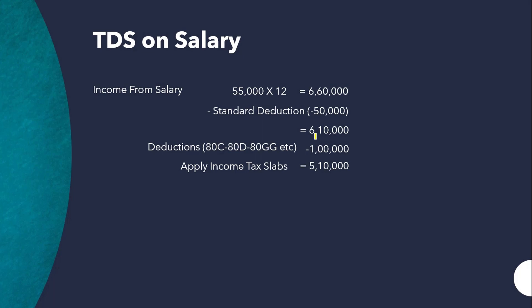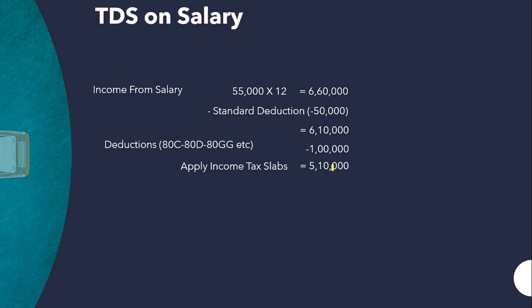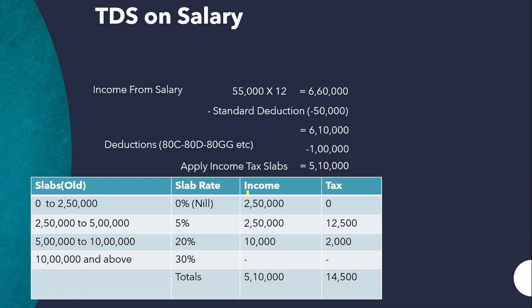We apply income tax slabs to ₹5,10,000. Note that I am using the old tax slabs, where you can claim the standard deduction of ₹50,000 and also deductions under Chapter 6A. Under the new income tax slab, these deductions cannot be utilized. So the total taxable income under the old regime is ₹5,10,000.